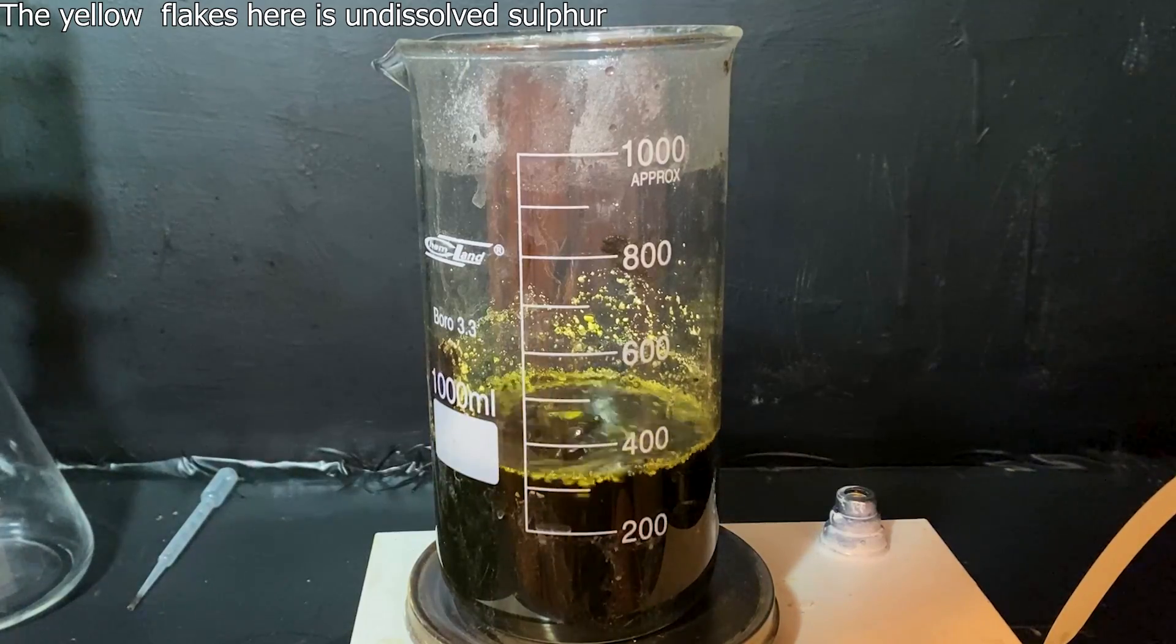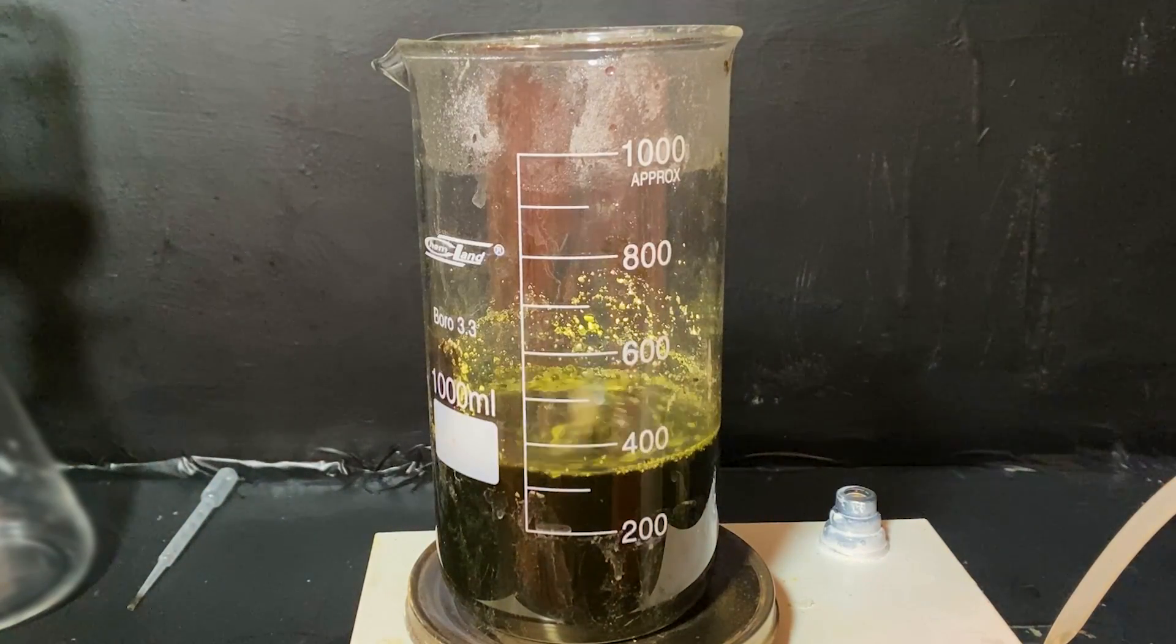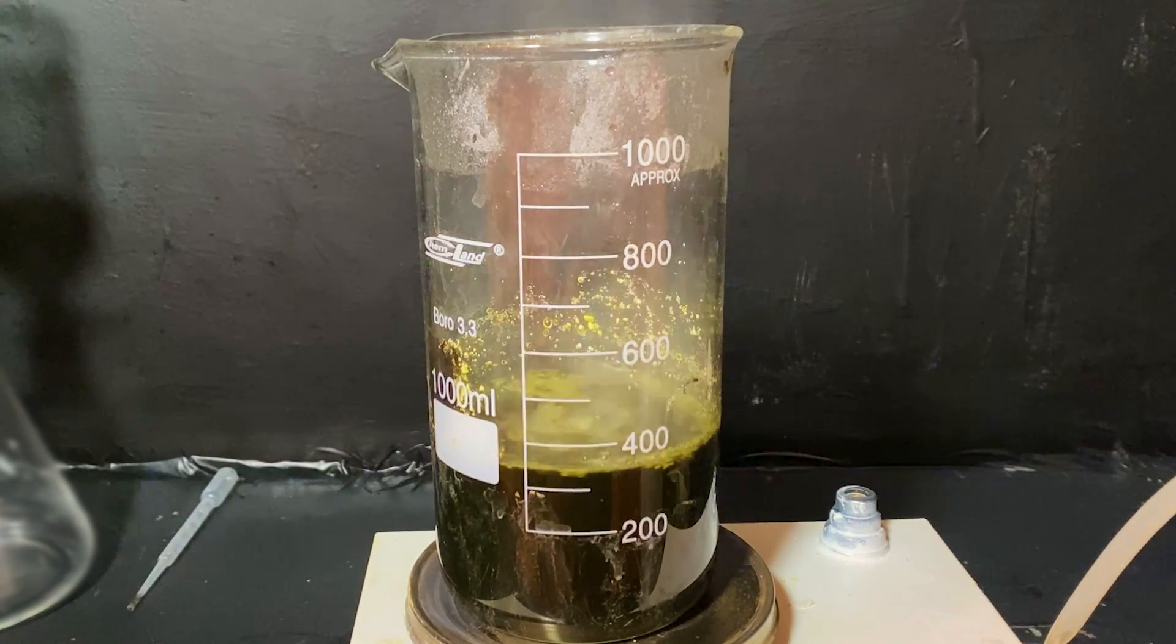Now, to crash out the mercury, I just have to add some aluminum foil, and I've begun by adding just a sliver of it. Immediately, an intense reaction happens where the aluminum is ripped to shreds by the sodium hydroxide and the sulfide complex.